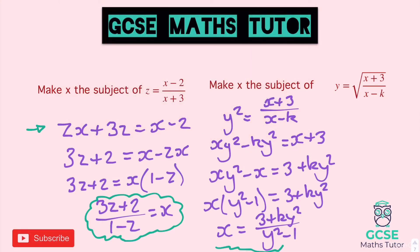Again, if you had changed the way you rearranged it ever so slightly, you could have minused the 3 over and moved the xy squared differently, getting a slightly different answer with lots of negatives. But there are two ways of doing it — that way keeps it nice and tidy with as few negative symbols as possible.